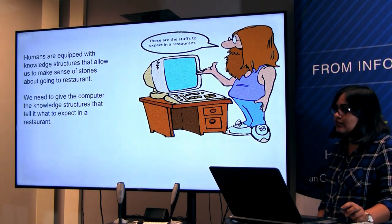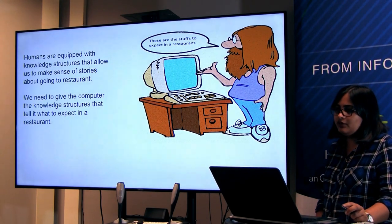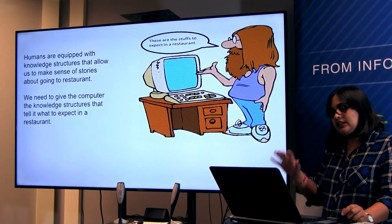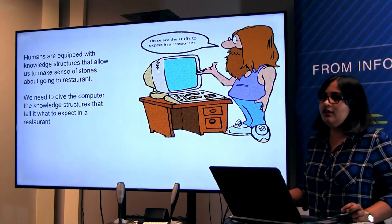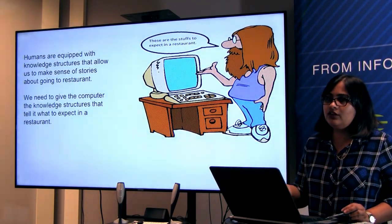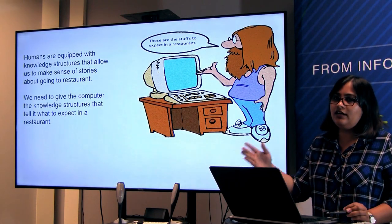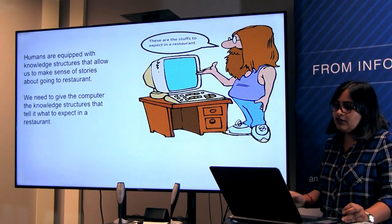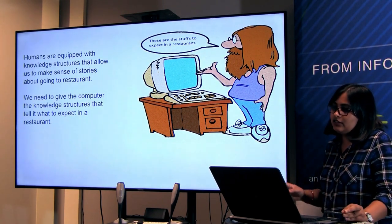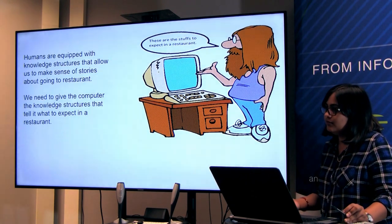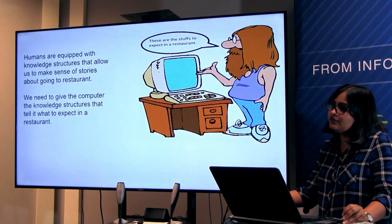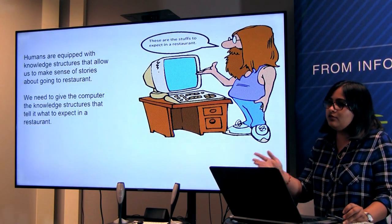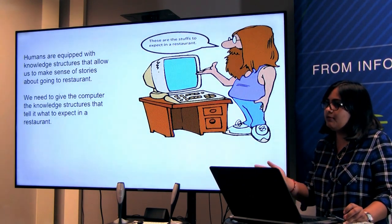We are equipped with knowledge structures that allow us to make sense of stories about going to a restaurant. We knew we are going to a restaurant and these are the kinds of nouns and verbs to use. We need to give the computer the same knowledge structures that will tell it: these are the steps you are going to expect in a restaurant, so you need to solve the example like this.